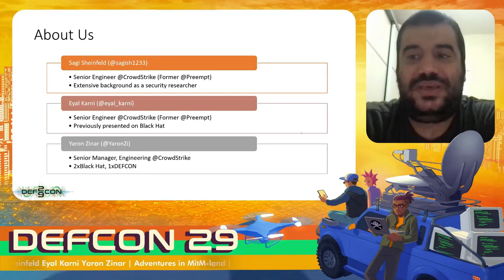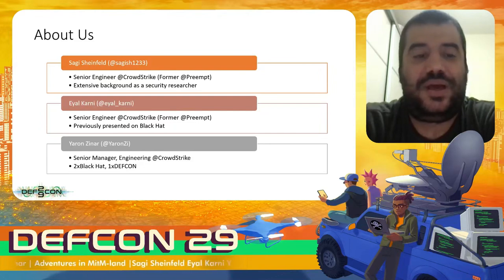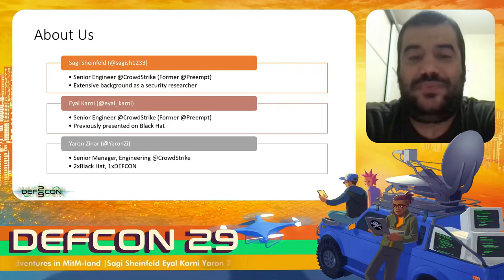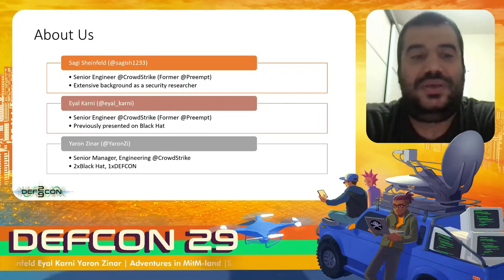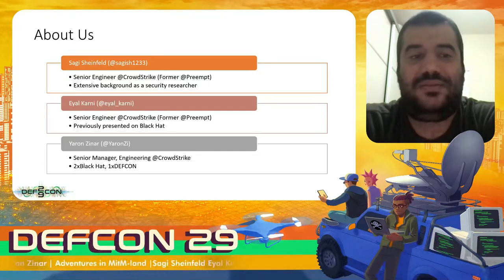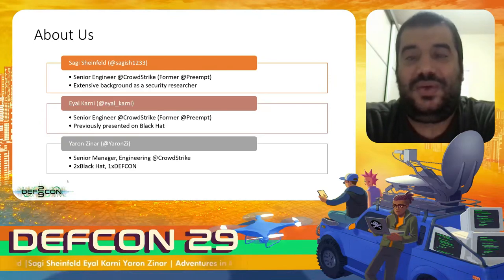Let me introduce us. I'm Yaron, manager on the engineering team at CrowdStrike. I've presented two times before at Black Hat and one time at DEFCON, and did a lot of research on authentication protocols. Eyal is an engineer who previously presented at Black Hat, and Sagi is also an engineer with extensive background as a security researcher across many organizations.